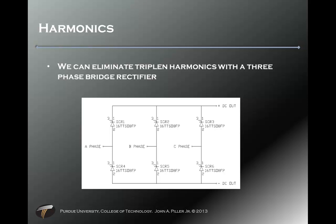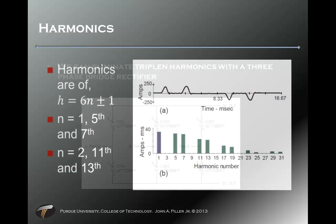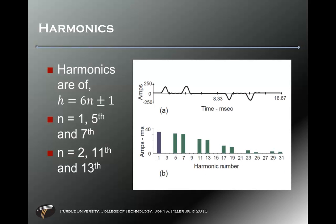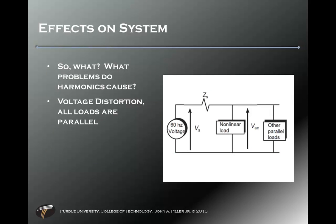We can eliminate triplen harmonics by using a three-phase bridge rectifier. Rather than using a single-phase VFD to run a three-phase motor, we could use a three-phase VFD. This configuration uses SCRs — phase-angle fired — so you can adjust the voltage output. You end up with the ampacity input to the three-phase bridge rectifier, and the harmonics of the third kind — 3rd, 9th, 15th, 21st — all drop out. The triplen harmonics are zero-sequence, so they're additive on the neutral, which is why we need to get rid of them, though other harmonics remain.